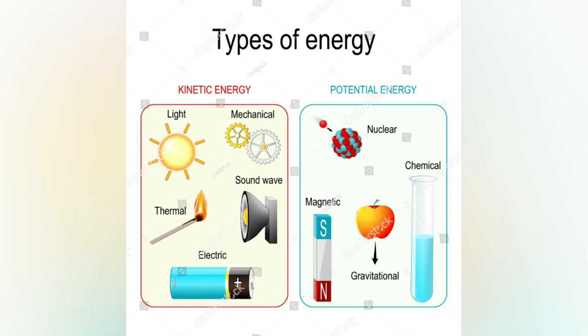Chemical potential energy is a form of potential energy related to the structural arrangement of atoms or molecules. This arrangement may be the result of chemical bonds.